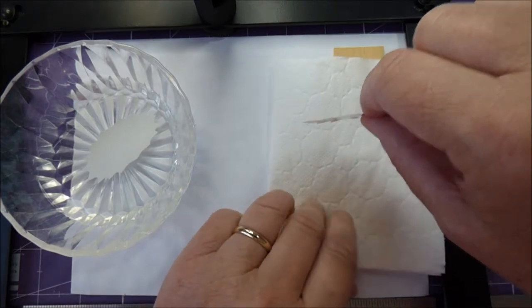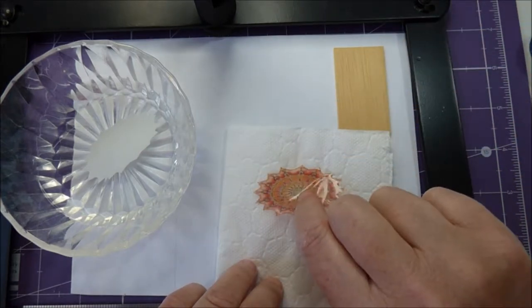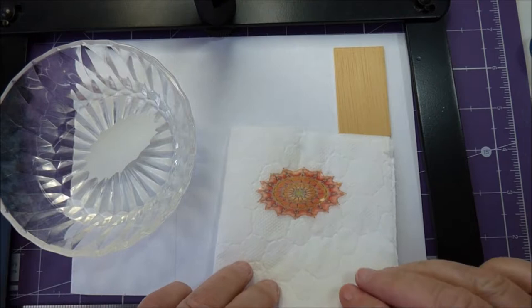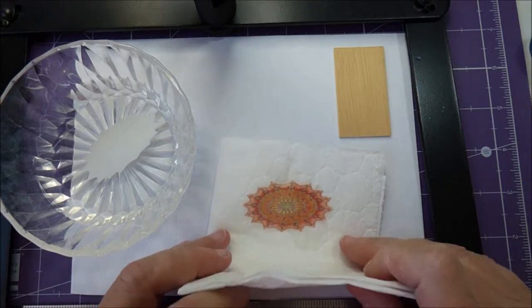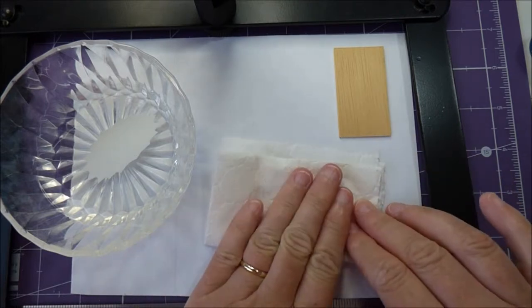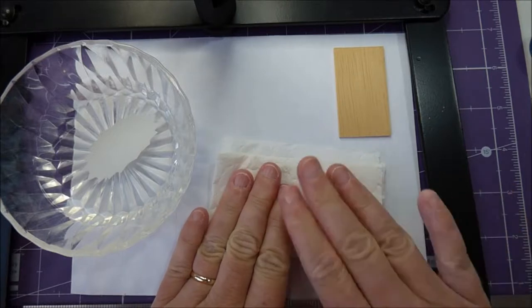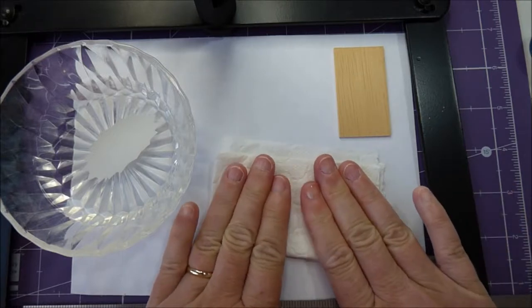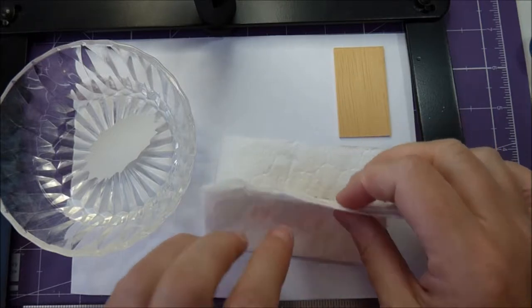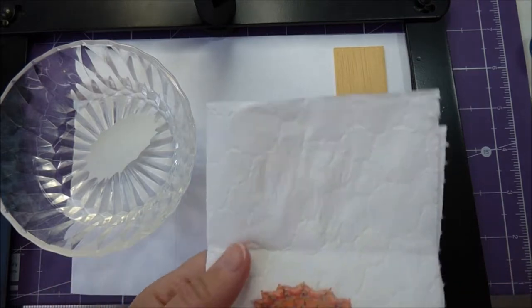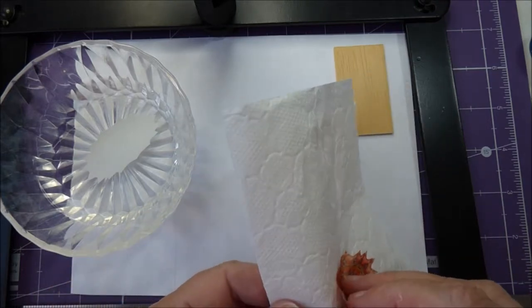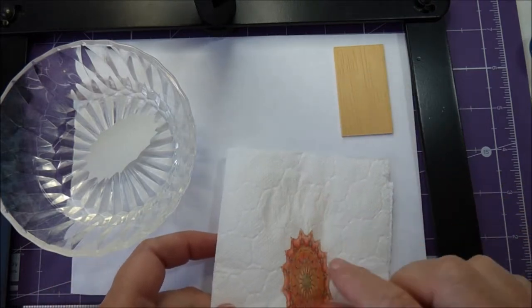Pop it down on the kitchen towel and just blot the excess water. The shiny side is the wrong side and there's a matte side which is the right side. Leave that to dry before gluing.